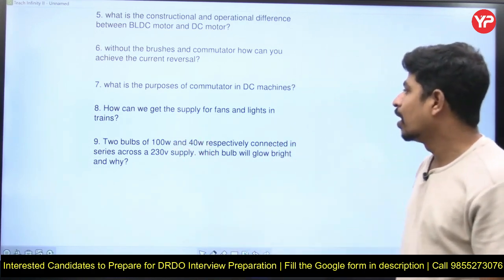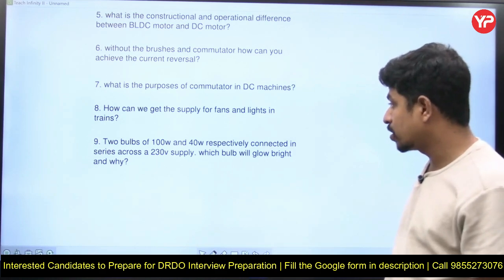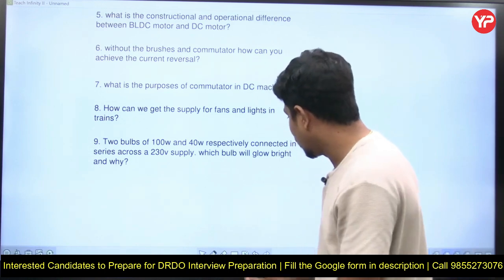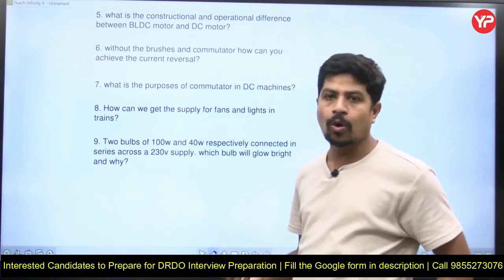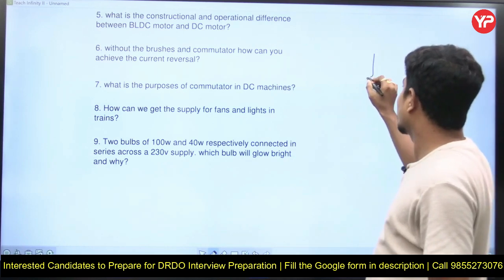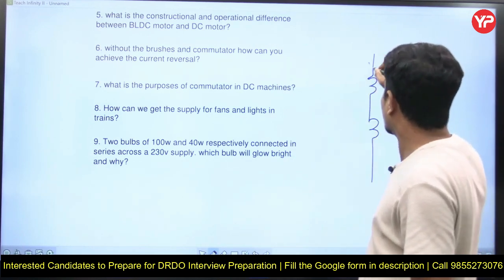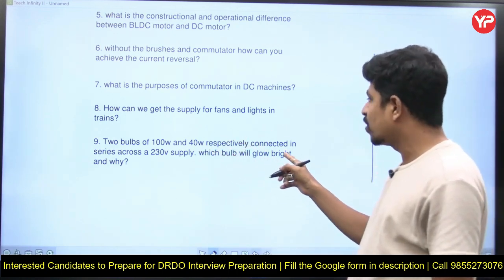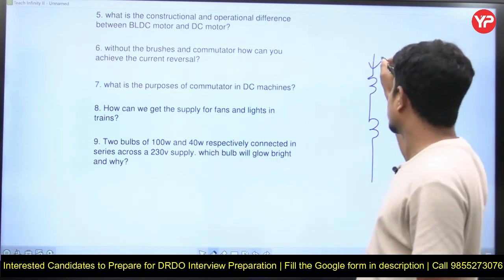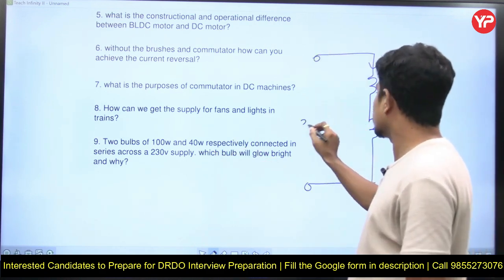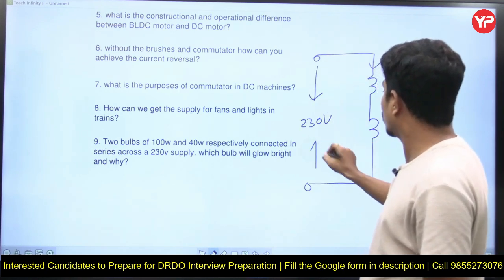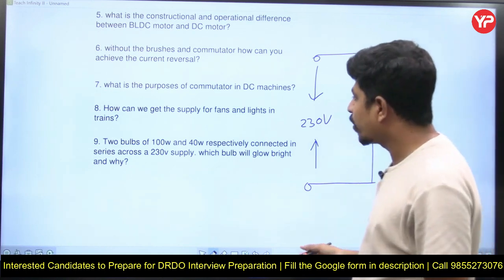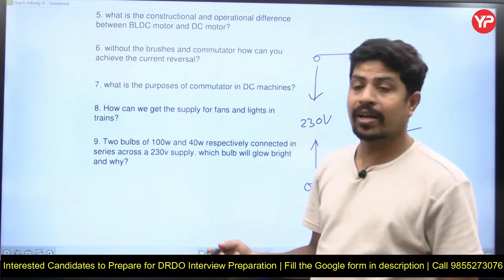Next question: two bulbs of 100 watts and 40 watts are connected in series across a 230-volt supply — which bulb will glow brighter and why? To answer this, you need the resistance of both bulbs. Both are connected in series, so both carry the same current. This is bulb one (100W) and bulb two (40W), connected in series across 230 volts, with resistances R1 and R2 respectively.